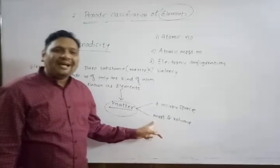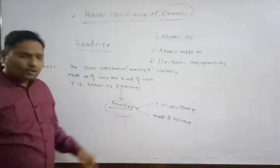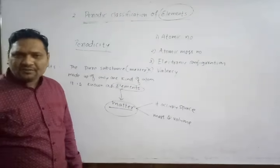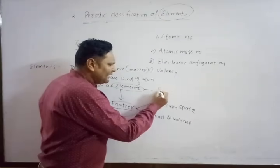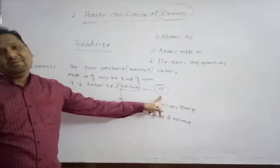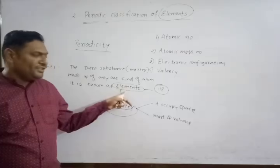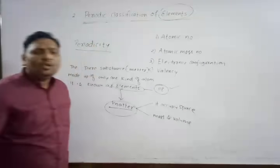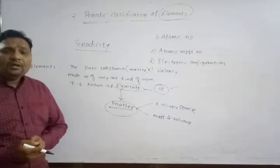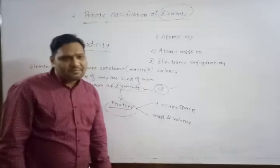The elements are made up of matter. How many elements exist till today? 118 elements exist till today. In this chapter we will deal with how the elements are classified. There were four systems of classification given in this chapter.